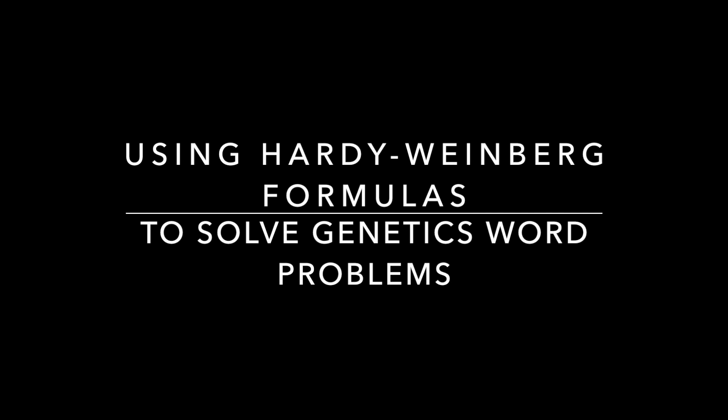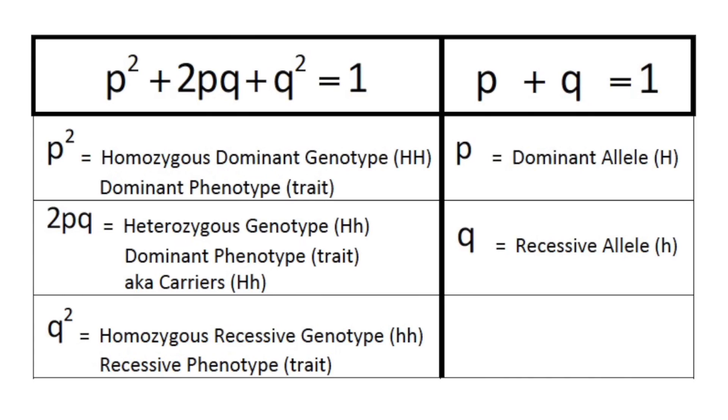I'm going to be showing you how to use Hardy-Weinberg equilibrium formulas to calculate genotype, phenotype, and allele frequency in genetics problems. The Hardy-Weinberg formulas help us determine genotype, phenotype, or allele frequency in populations that have reached equilibrium. So let's take a look at the formulas.